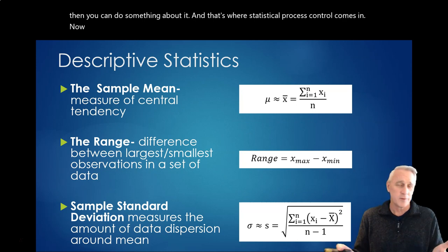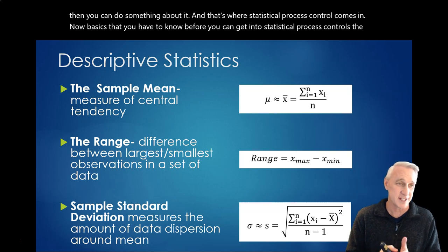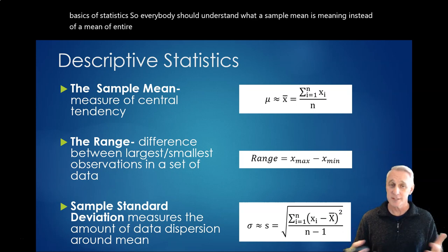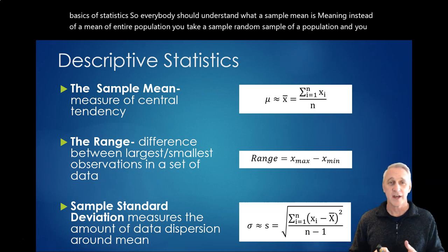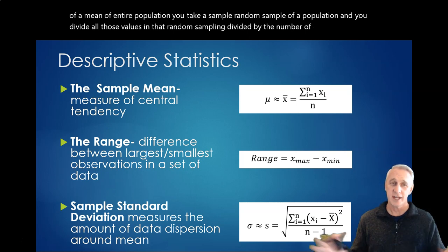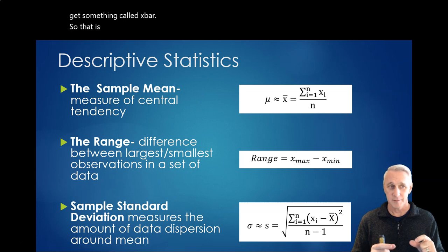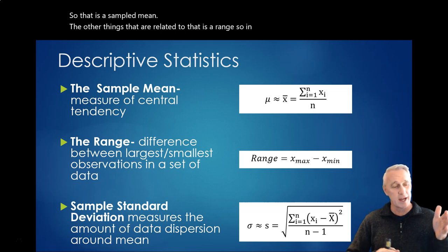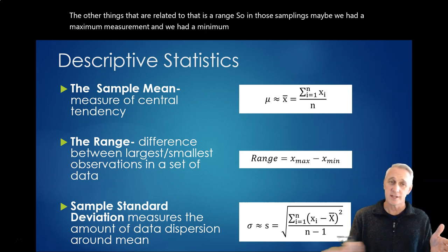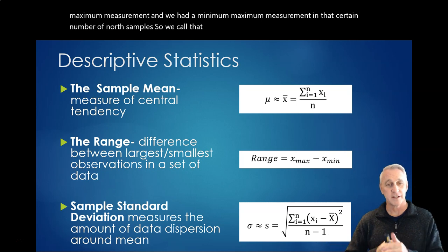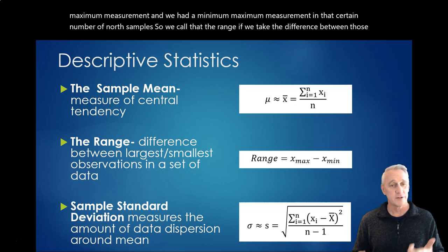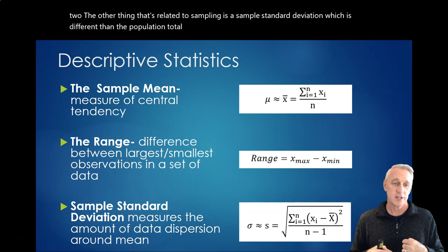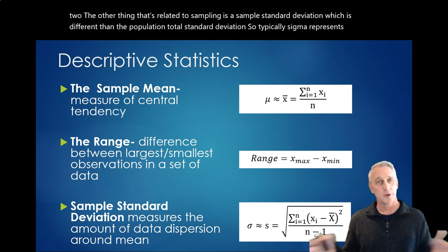Now, basics that you have to know before you can get into statistical process control is the basics of statistics. So everybody should understand what a sample mean is, meaning instead of a mean of entire population, you take a sample, a random sample of a population, and you divide all those values in that random sampling divided by the number of samples, n, and you get something called x-bar. So that is a sampled mean. The other things that are related to that is a range. So in those samplings, maybe we had a maximum measurement and we had a minimum measurement in that certain number of n samples. So we call that the range if we take the difference between those two.